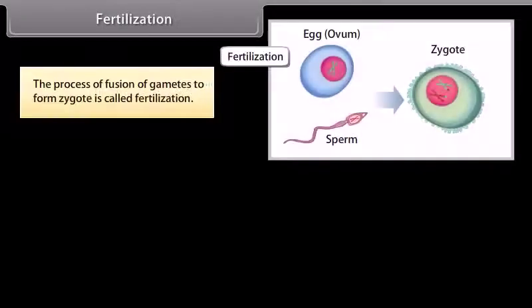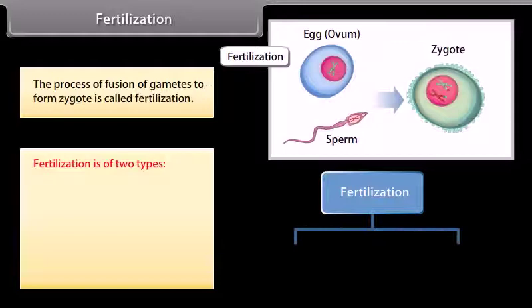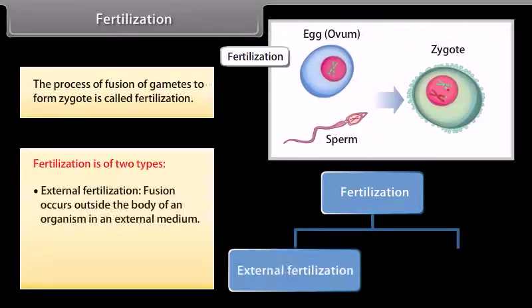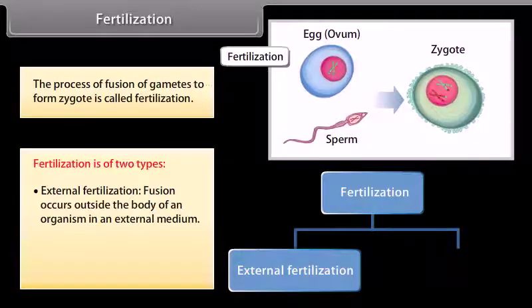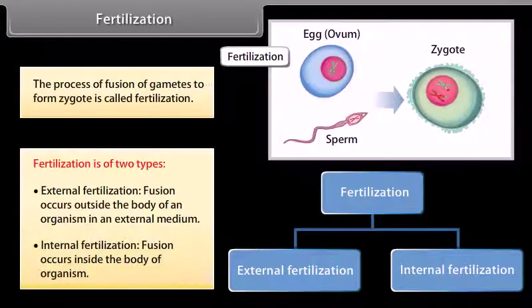The process of fusion of gametes to form a zygote is called fertilization. Fertilization is of two types: external fertilization, where fusion occurs outside the body of an organism in an external medium; and internal fertilization, where fusion occurs inside the body of the organism.